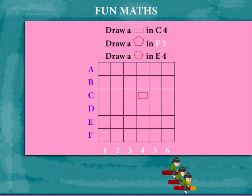Now, a pentagon in F2. So, F row and column 2. It's easy.